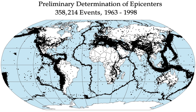However, accurate recordings of earthquakes only began in the early 1900s, so it is too early to categorically state that this is the case. Most of the world's earthquakes—90%, and 81% of the largest—take place in the 40,000-kilometer long, horseshoe-shaped zone called the Circumpacific Seismic Belt, known as the Pacific Ring of Fire, which for the most part bounds the Pacific Plate. With the rapid growth of mega-cities such as Mexico City, Tokyo and Tehran in areas of high seismic risk, some seismologists are warning that a single quake may claim the lives of up to 3 million people.